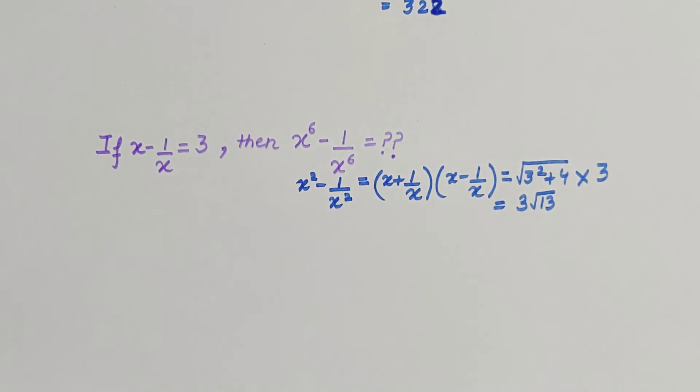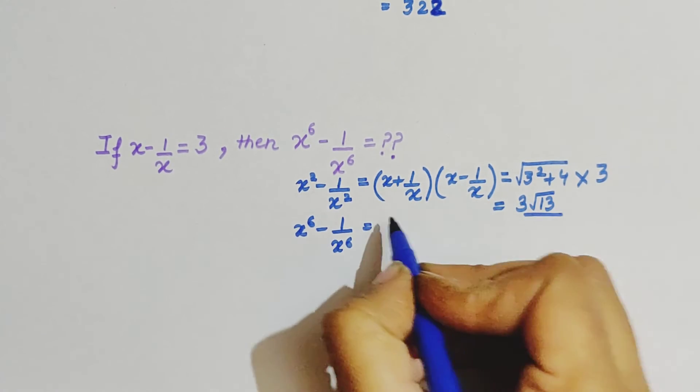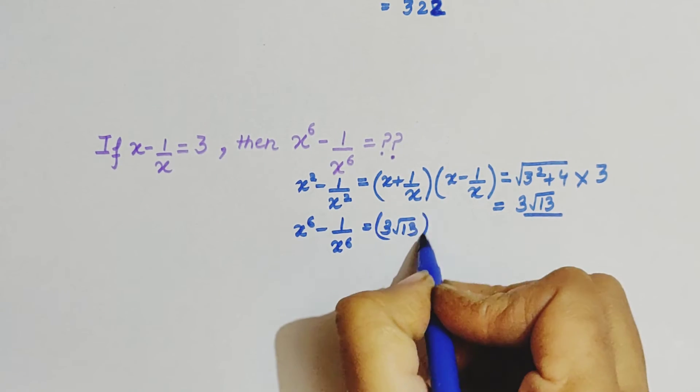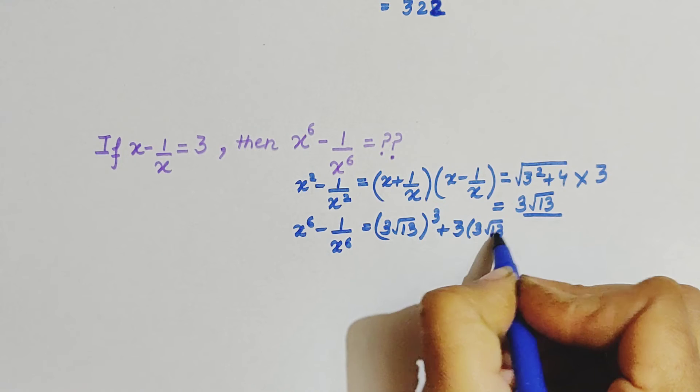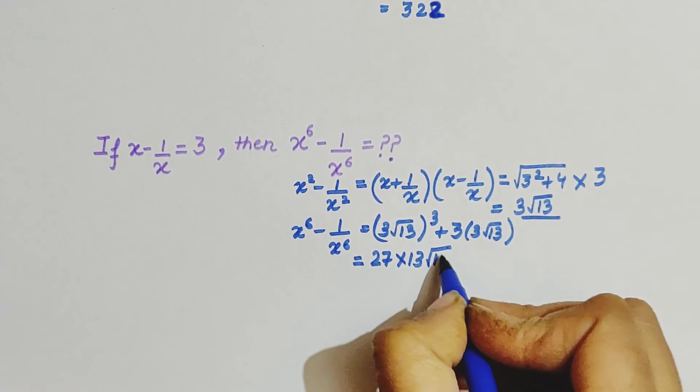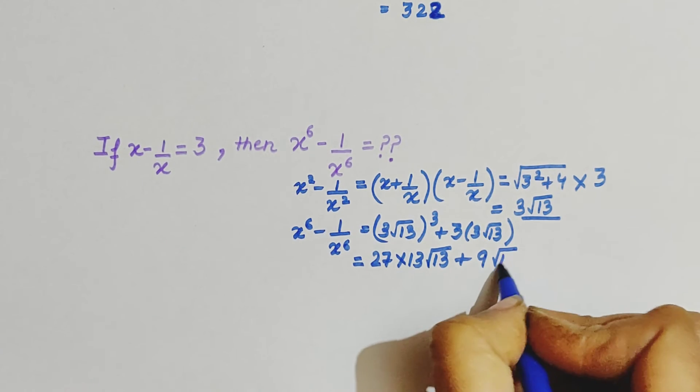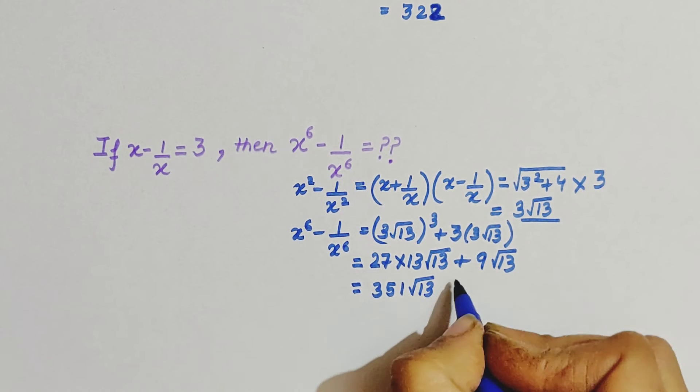To find this, simply cube this equation, cube this value. Here there is minus, so it will become plus, 3 times of 3 root 13. Simply simplify, that will be 27 into 13 root 13 plus 9 root 13.